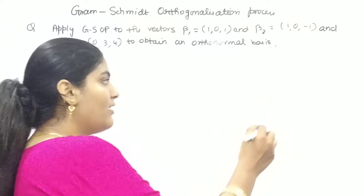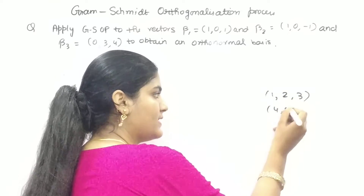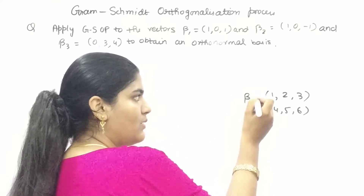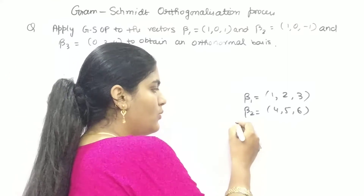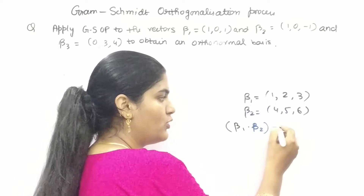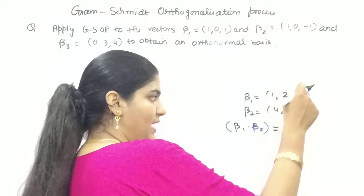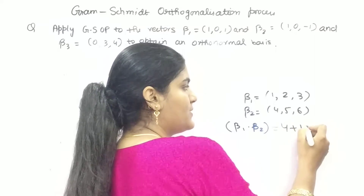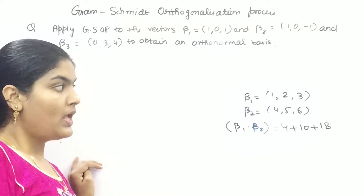Let's say you have your bases beta 1 = [1, 2, 3] and beta 2 = [4, 5, 6]. Now, if you want to find out the inner product of beta 1 and beta 2, simply multiply the x component with x, y with y, z with z, and add them up. So 4 times 1 is 4, 5 times 2 is 10, 6 times 3 is 18 — and this will be your inner product of those vector spaces.